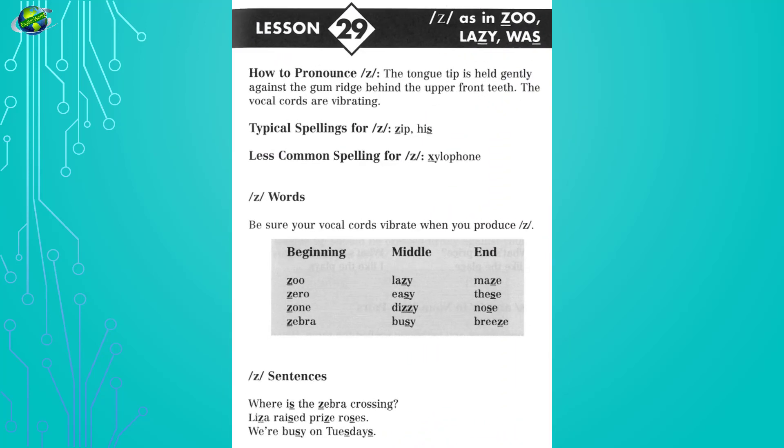Lesson 29: Z as in zoo, lazy, was. Listen and repeat. Zoo, zero, zone, zebra, lazy, easy.